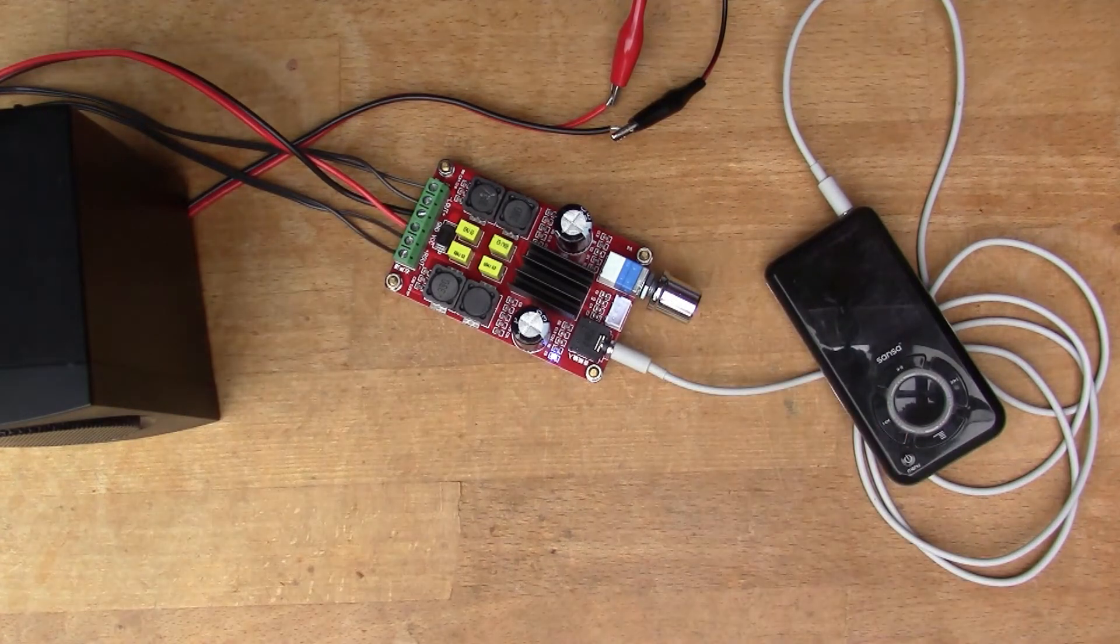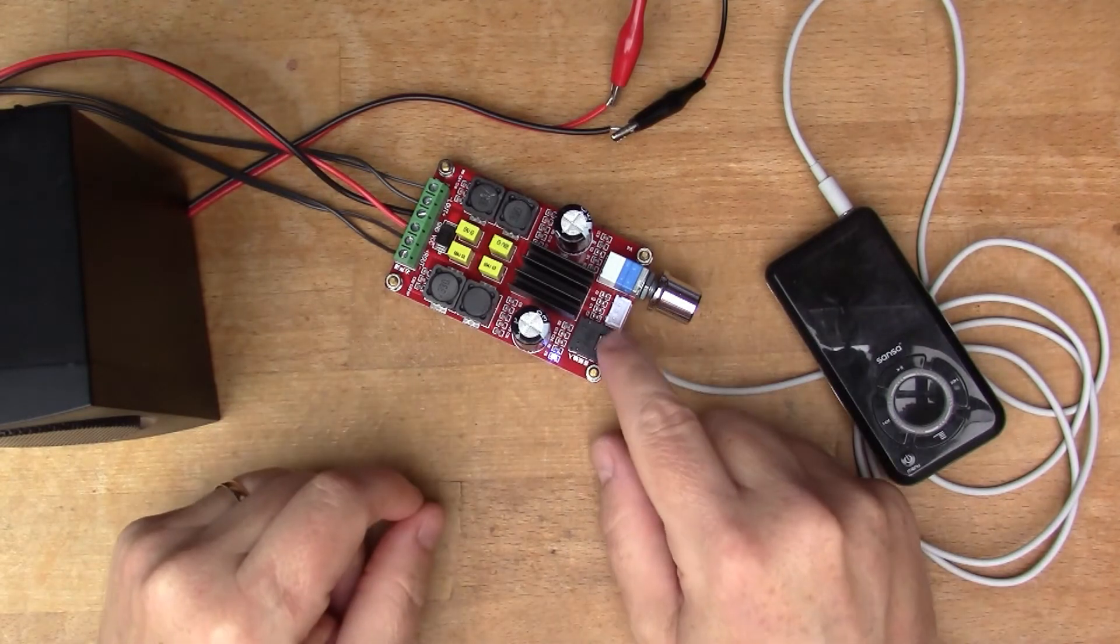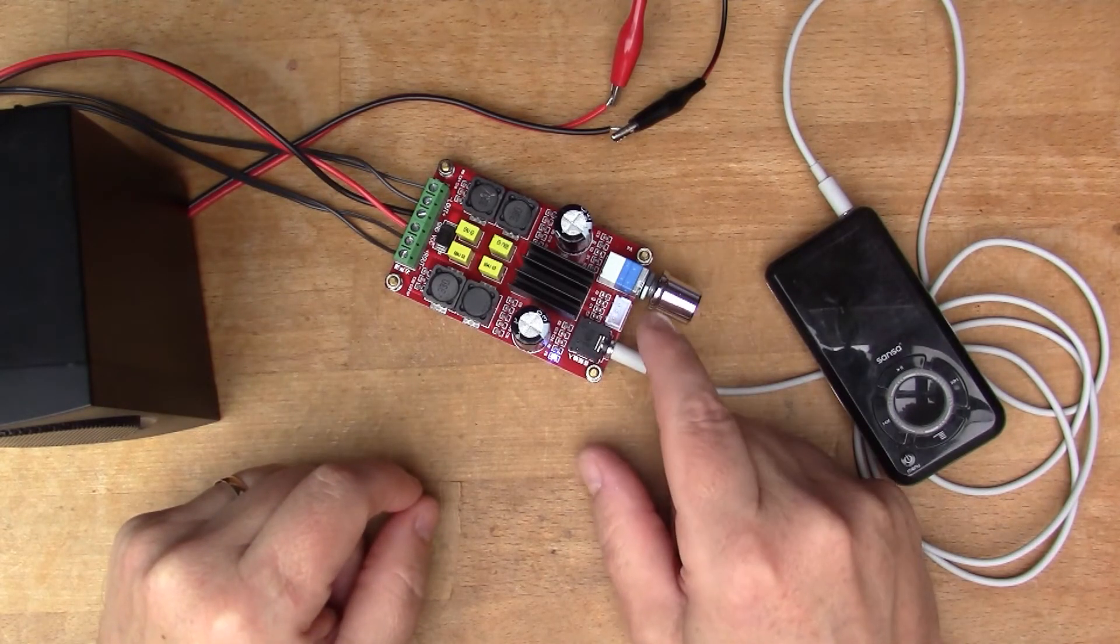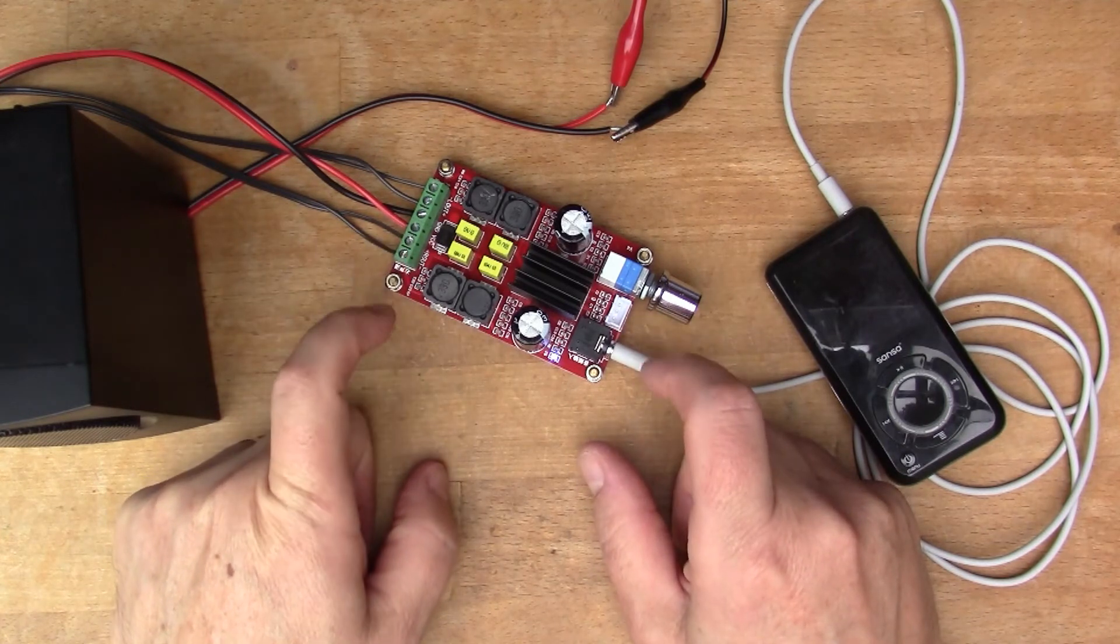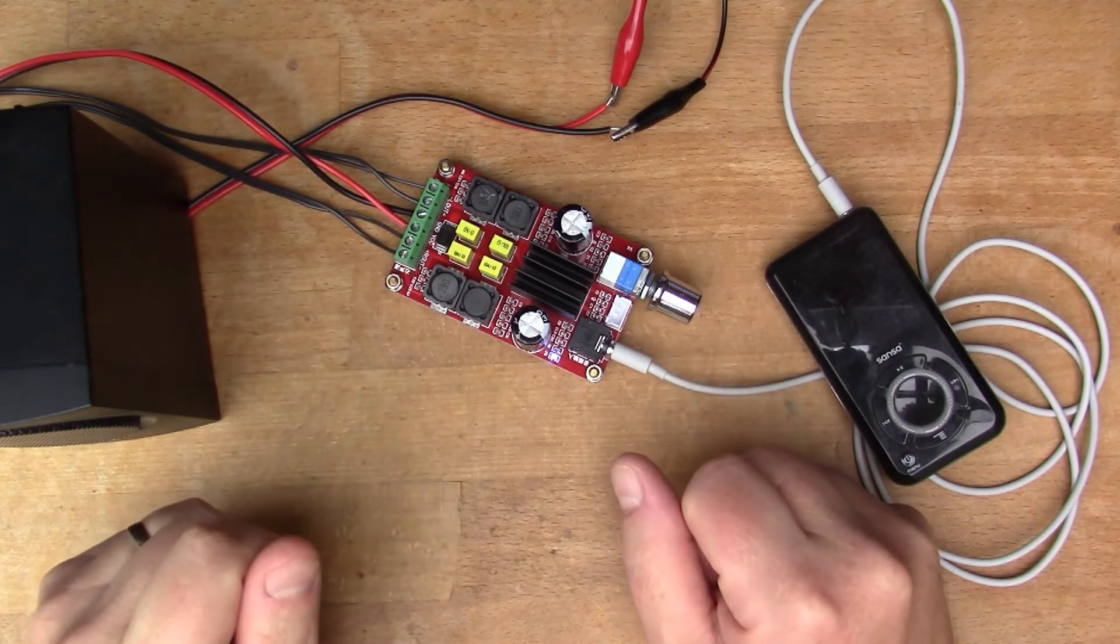So what I might do now is connect it up to the oscilloscope and put a sine wave in here and grab the output on the scope and see if there's any visible distortion.